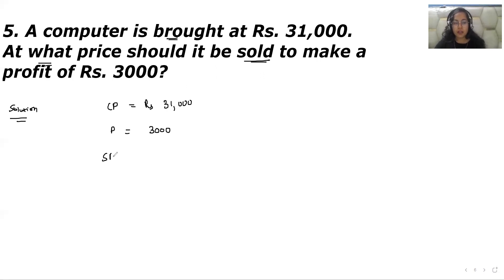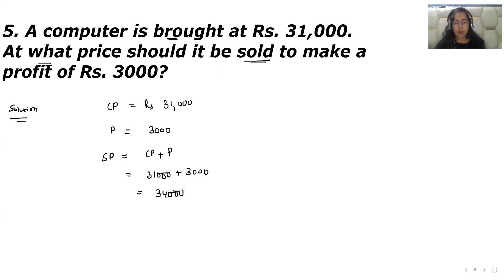The formula for selling price when cost price and profit are given is cost price plus profit. So selling price equals Rs 31,000 plus Rs 3,000, which is Rs 34,000. They must sell this computer at Rs 34,000 to make a profit of Rs 3,000.